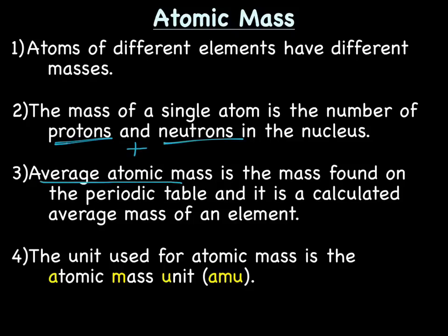Average atomic mass is what we find on the periodic table and it is a calculated average mass of an element. The unit used for atomic mass is the atomic mass unit or amu.